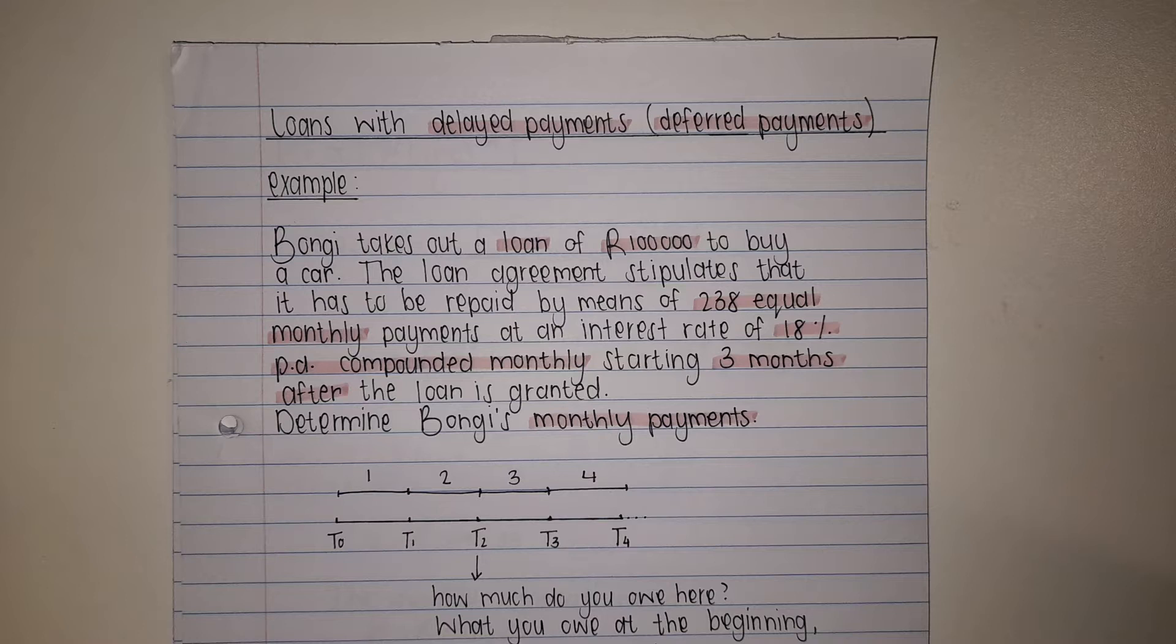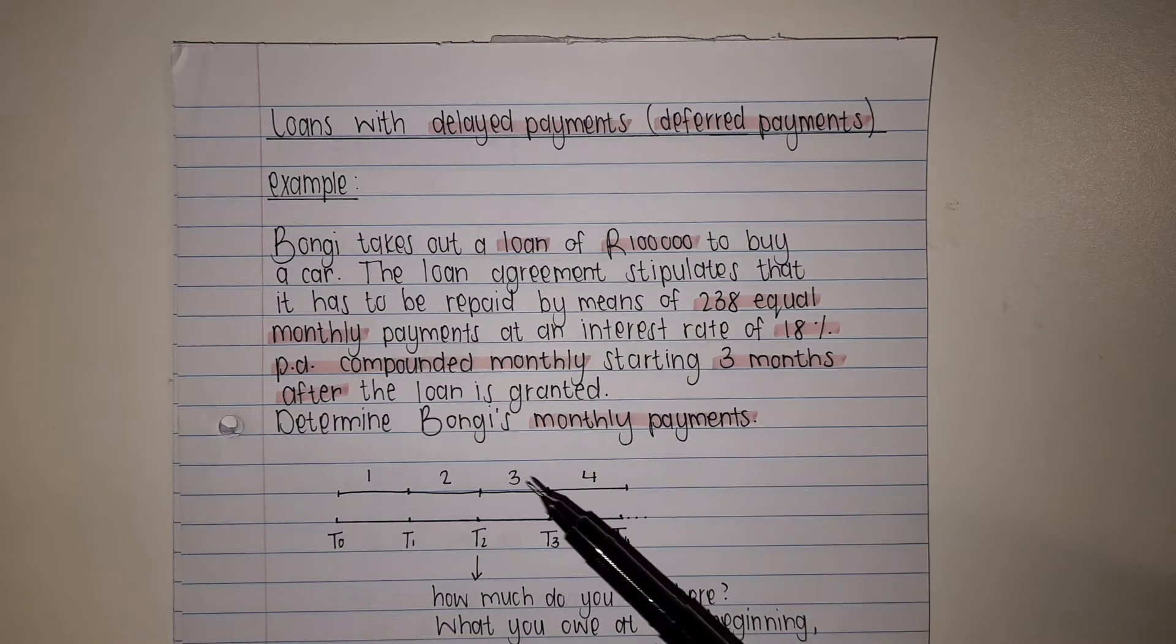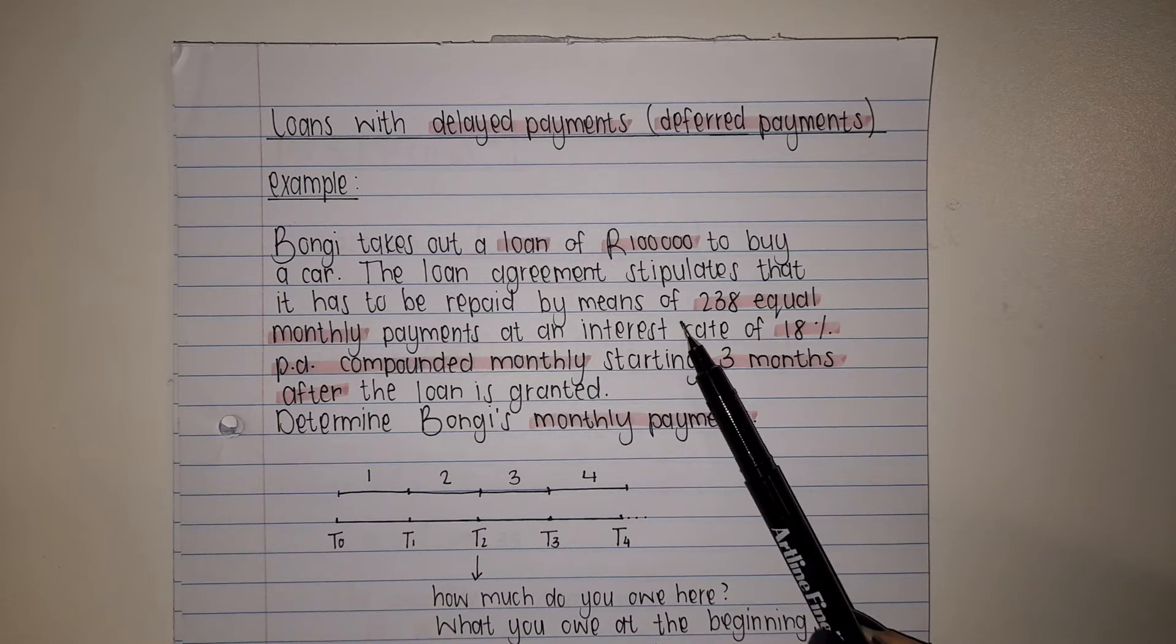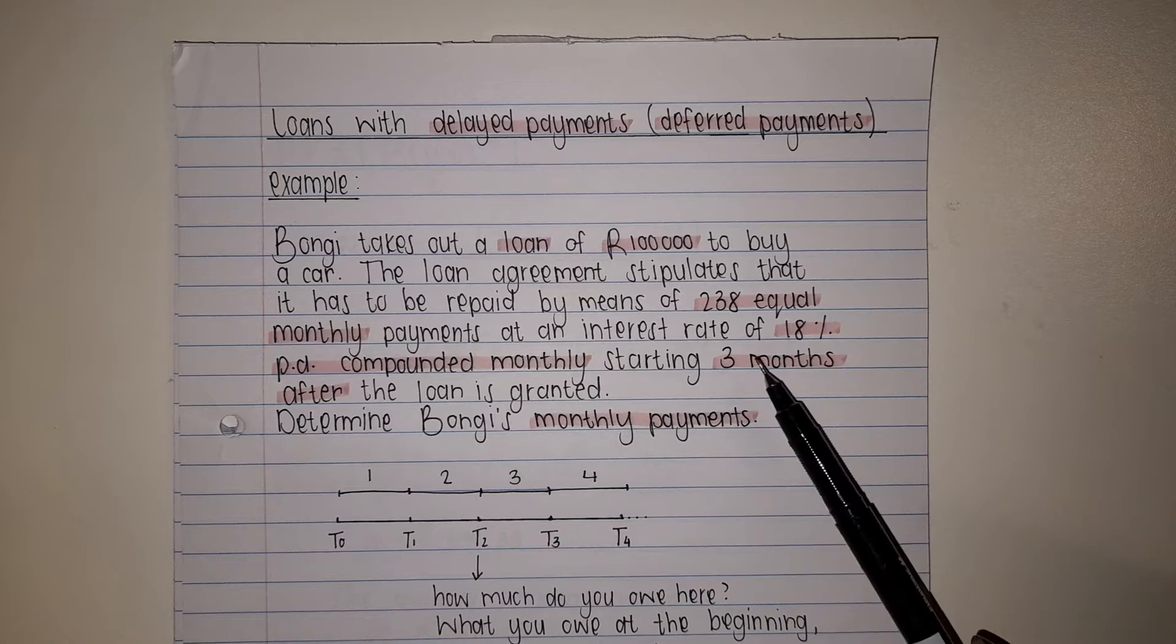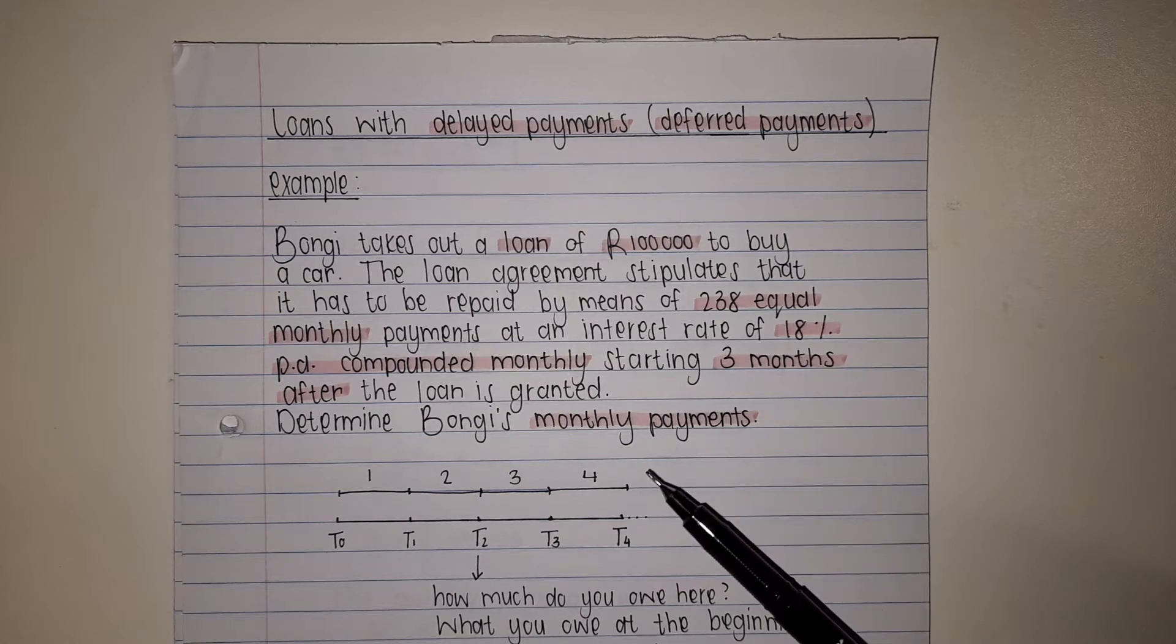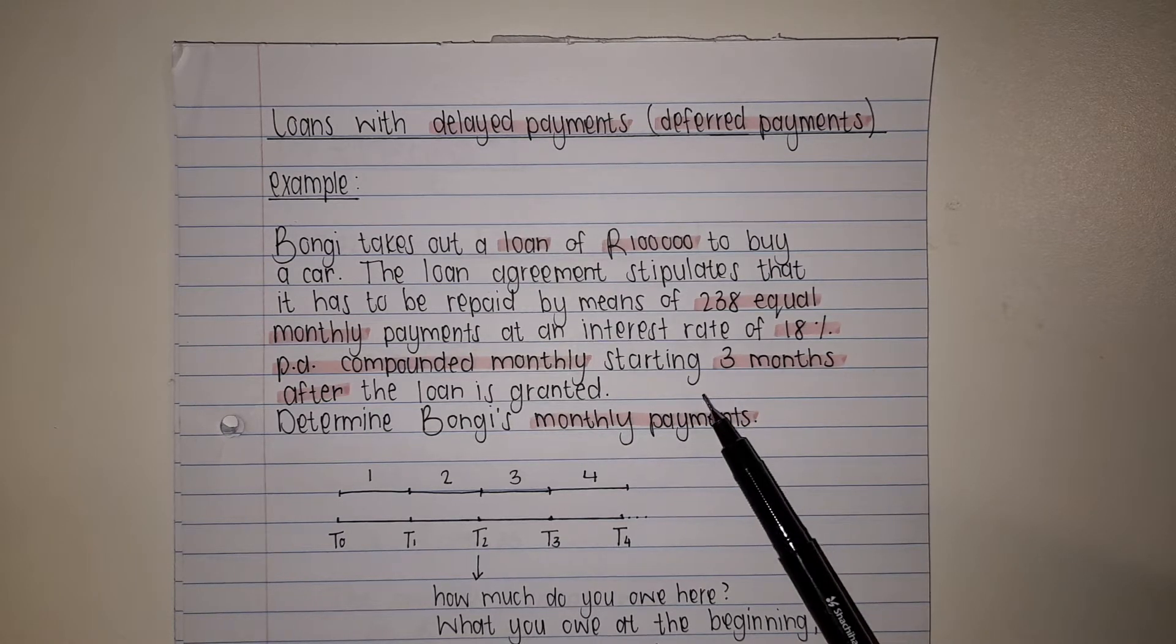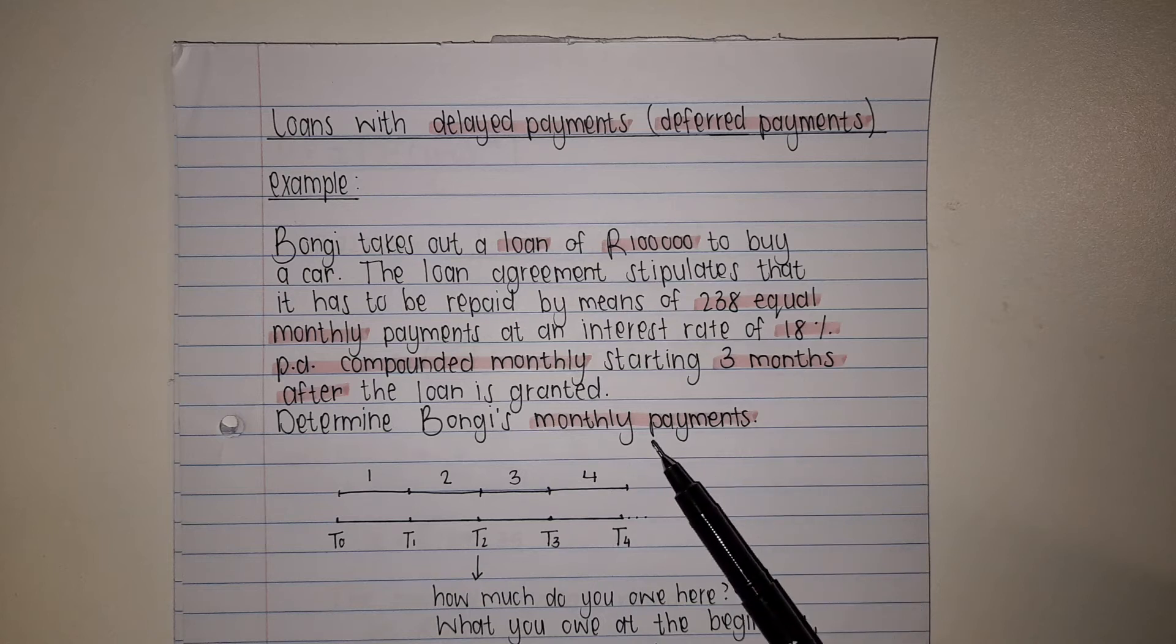Bangu takes out a loan of 100,000 Rand to buy a car. The loan agreement stipulates that it has to be repaid by means of 238 equal monthly payments at an interest rate of 18% per annum compounded monthly starting three months after the loan is granted.